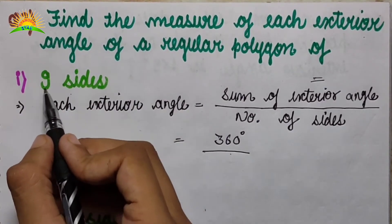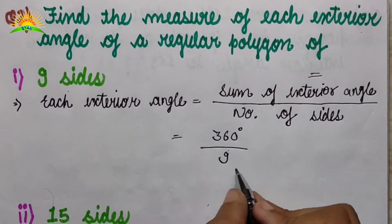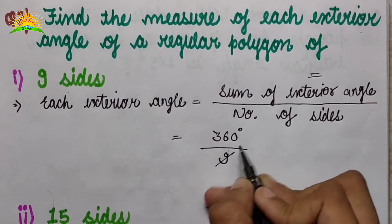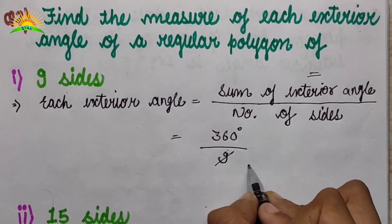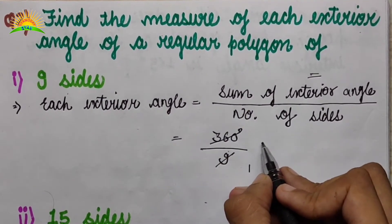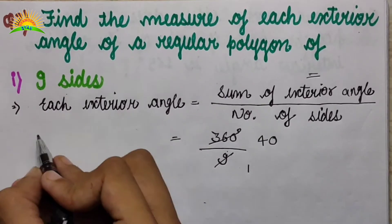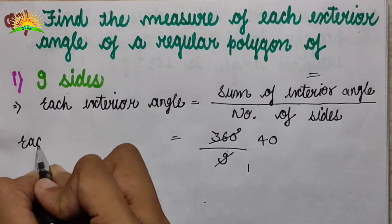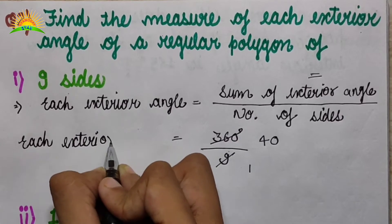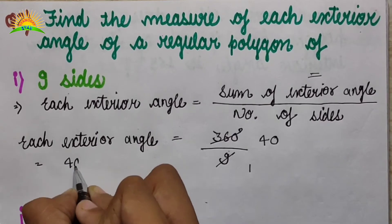The number of sides given is 9, so we write 360 divided by 9. We cancel out: 9 goes into 360, giving 40. So each exterior angle is equal to 40 degrees.